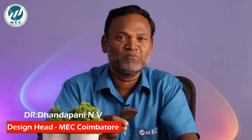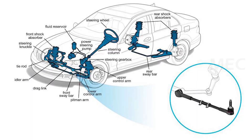Let me share with you regarding casting and machining processes with respect to drawings. For example, if you take a vehicle, it has a steering mechanism used for left or right turns. This mechanism is connected with a tie rod. The tie rod consists of end fittings — the tie rod ending — which is a cast component, because casting components withstand more compressive load.